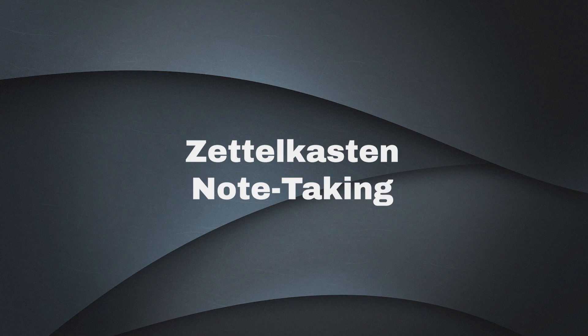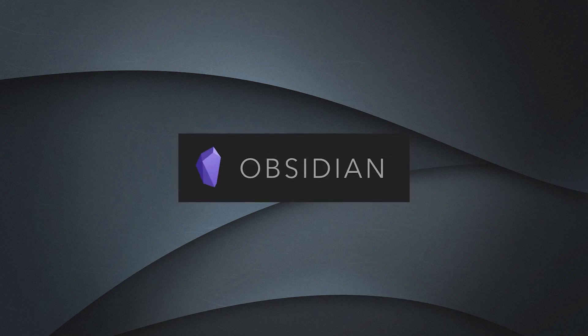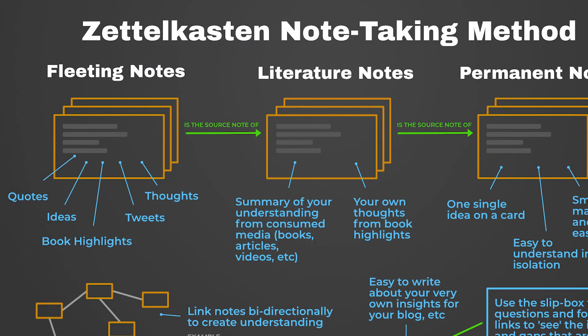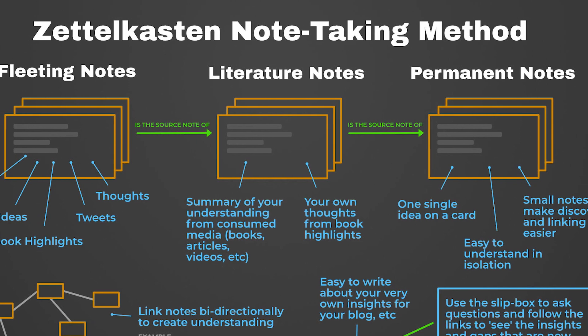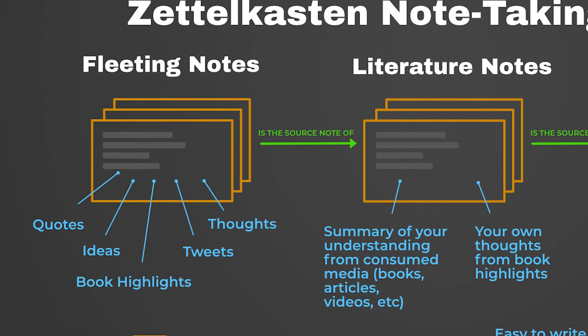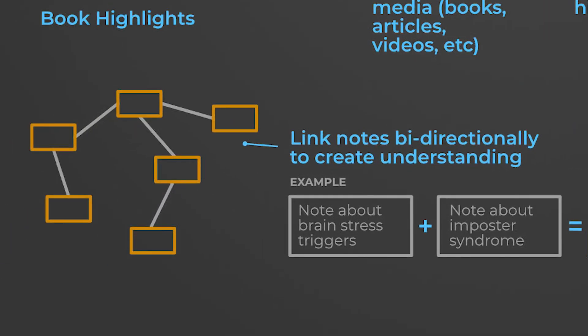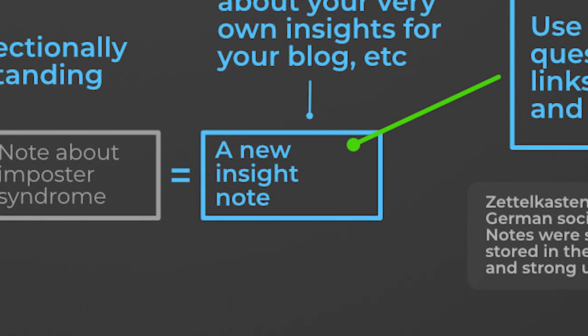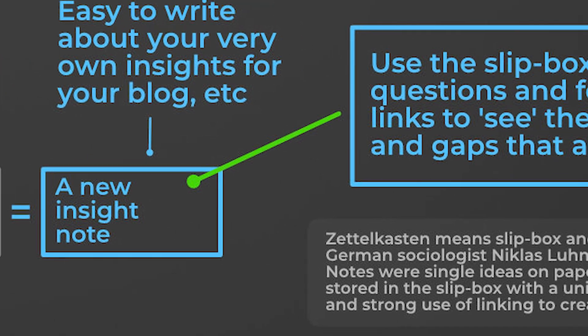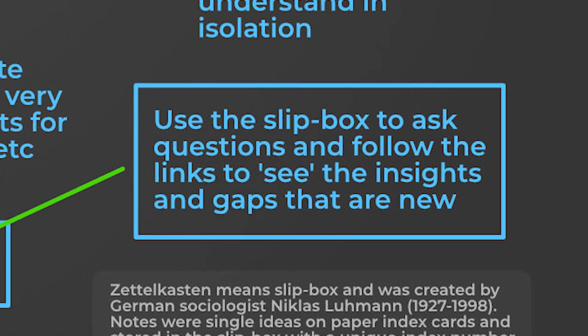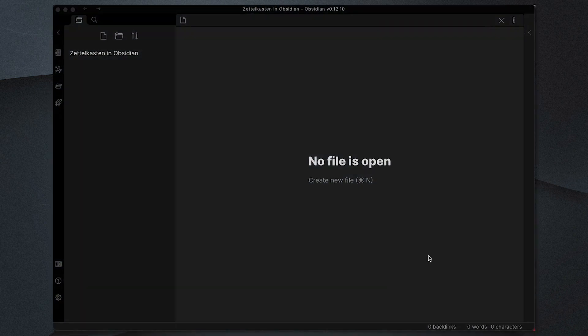Welcome back to another video. In this video I'm going to be showing how to apply the Zettelkasten method in Obsidian. In my previous video I covered an overview of the different components of the Zettelkasten — the fleeting notes, the literature notes, the permanent notes — how you link those together so that you can use it to create new ideas, new thoughts, new connections and ask questions against your slip box. In this video I'm going to show how to assemble that using Obsidian.